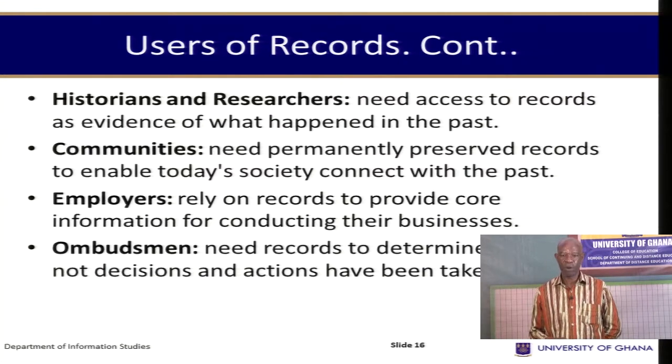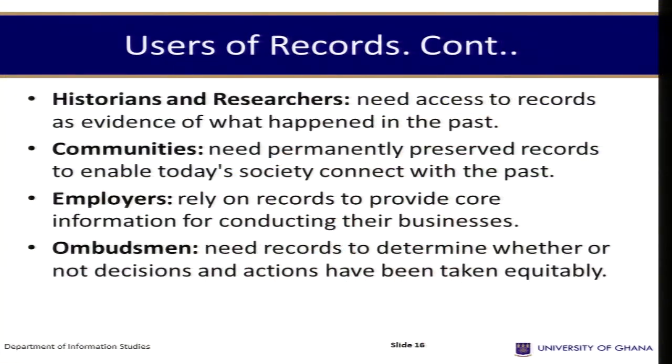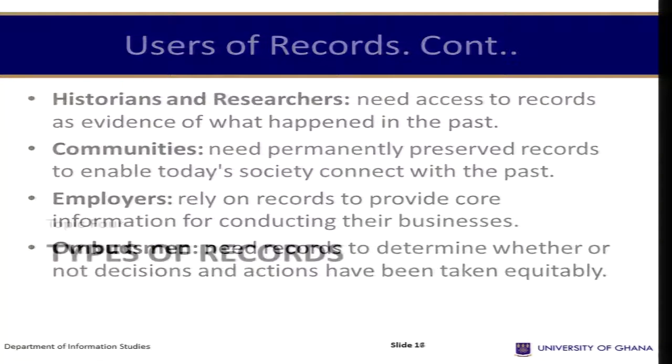Employers rely on records to provide core information for conducting their businesses. The ombudsman needs records to determine whether decisions and actions have been taken equitably. In Ghana, the ombudsman can be equated to the Commission for Human Rights and Administrative Justice (CHRAJ), which relies on records in carrying out its work.